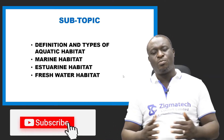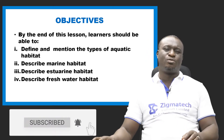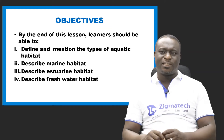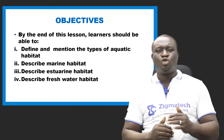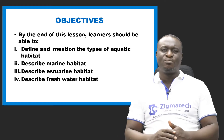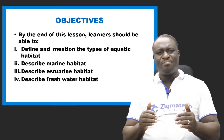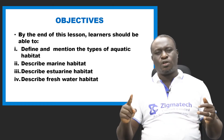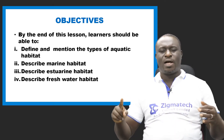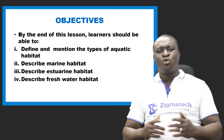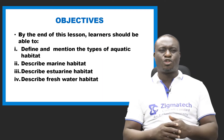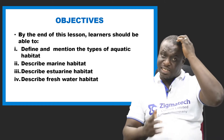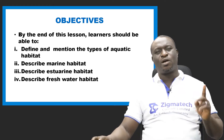Now, let's look at objectives. By the end of this lesson, you should be able to define aquatic habitat and mention its types. You should be able to describe marine habitat based on characteristics, organisms, food chain, and factors. We will do the same for estuarine habitat, and you should also be able to describe freshwater habitat. If you're set, let's take a look at this wonderful topic — aquatic habitat.